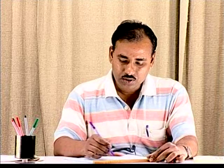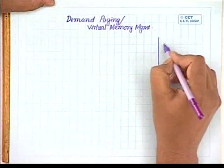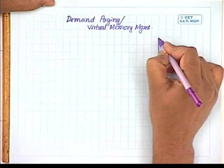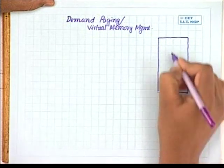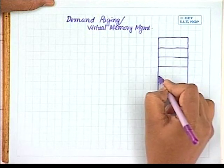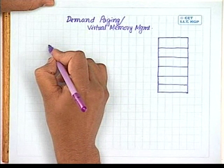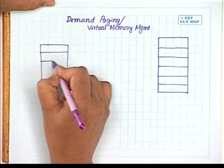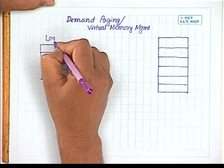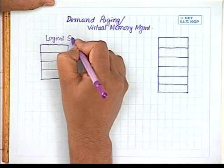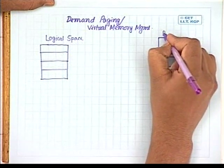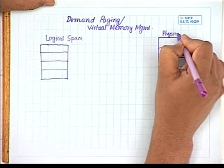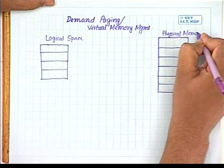The reason is simple: for execution of a job, it is not necessary that the entire logical space of the job be loaded in the main memory. The main memory is divided into a number of frames of equal size. The logical space of the job will also be divided into a number of pages, and page size and frame size will obviously be the same. This is the logical address space and this is the physical memory.